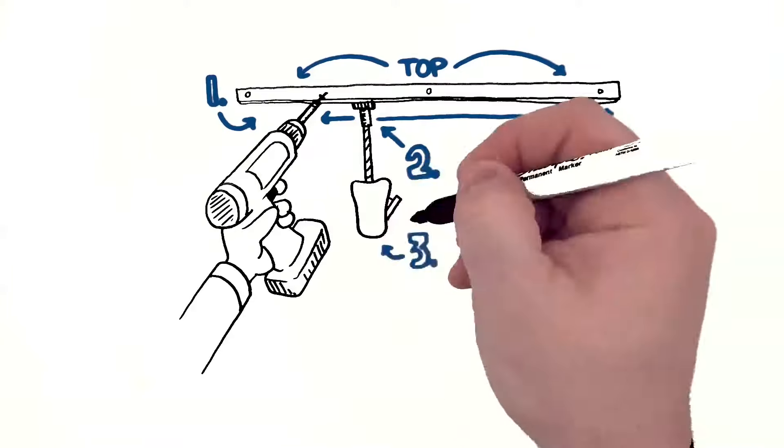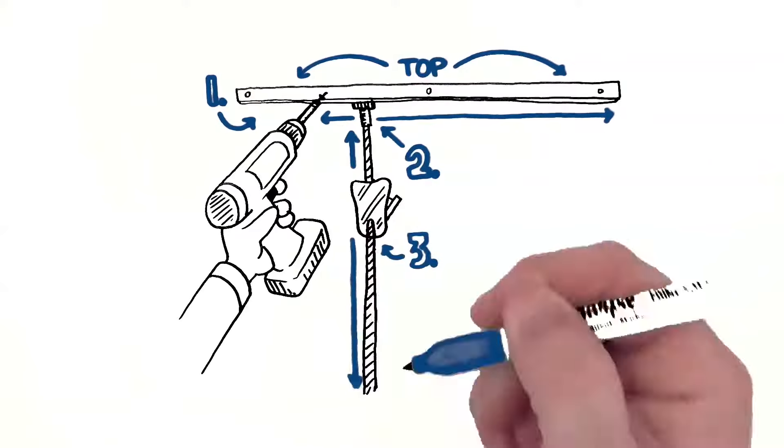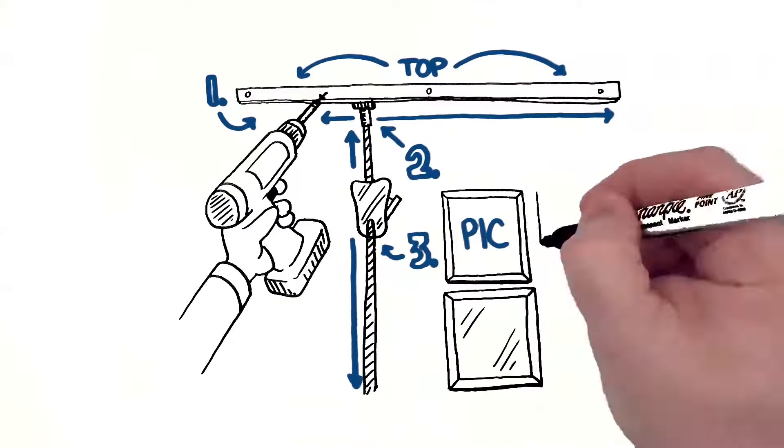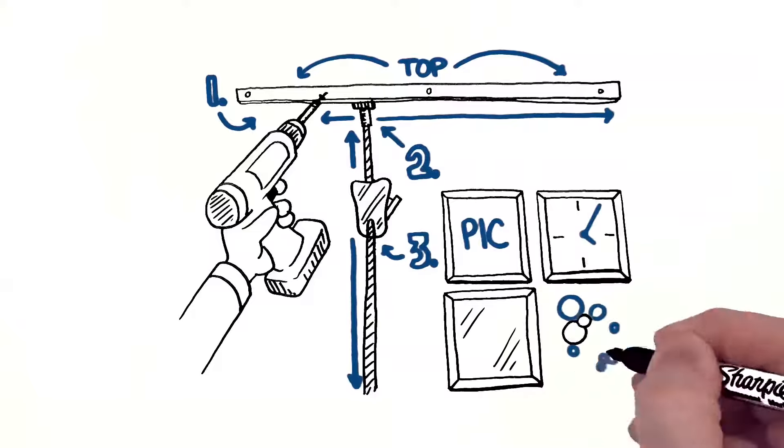Three, hooks that slide up and down the hangers, adjusting the height of not only pictures, but mirrors, clocks, and other objects you'll love to hang.